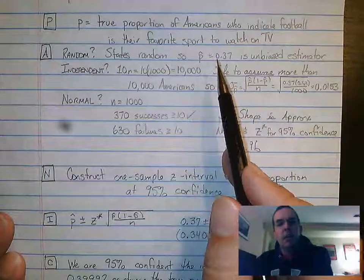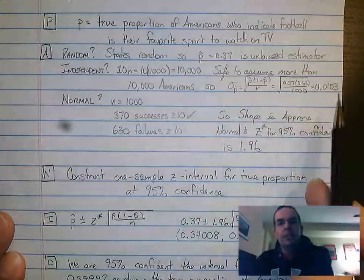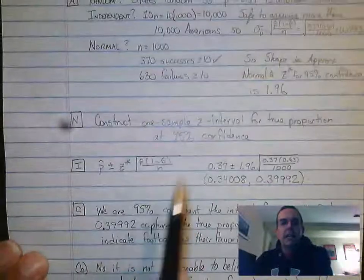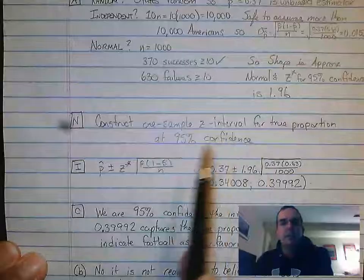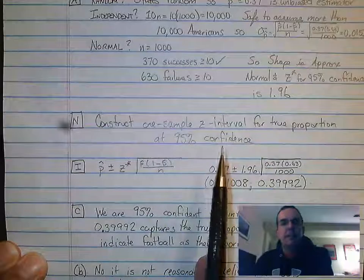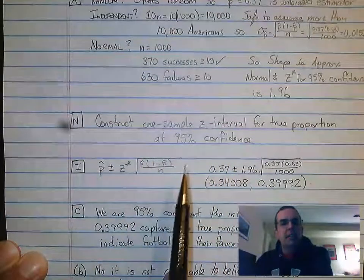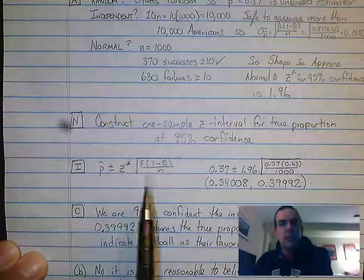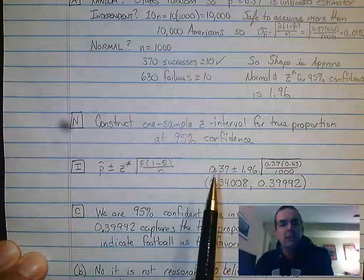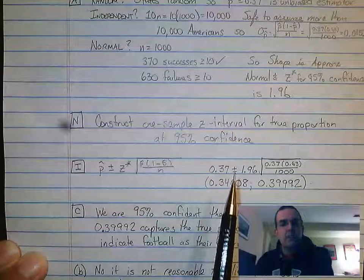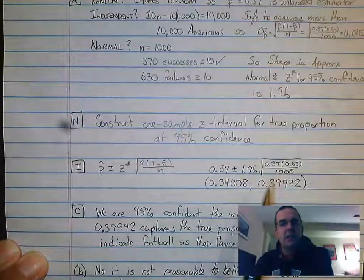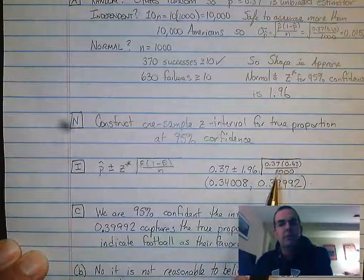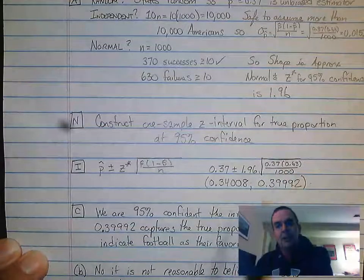So now what we have is we have our point estimate, we have our standard error, and we have our critical value. I am constructing a 95% confidence interval for true proportion at 95% confidence. This formula is sort of on your formula sheet. I'll do a video where we'll kind of go over where everything is on the formula sheet. But the important part is plugging these numbers in. So 0.37 plus or minus 1.96 over the square root of 0.37 times 0.63 over 1,000.